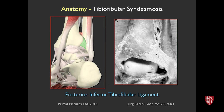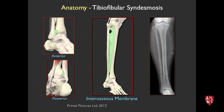Similarly, looking from a posterior approach, you have the tibia and fibula with this triangular-shaped tibiofibular ligament — a nice broad ligament, a very strong structure binding the tibia to the fibula. And then, ascending throughout the entirety of the tibiofibular interspace is the interosseous membrane.